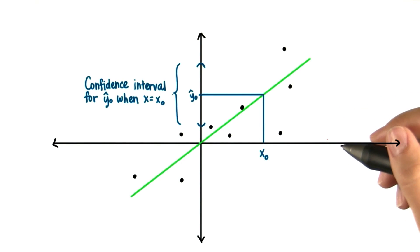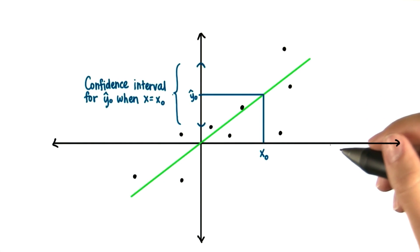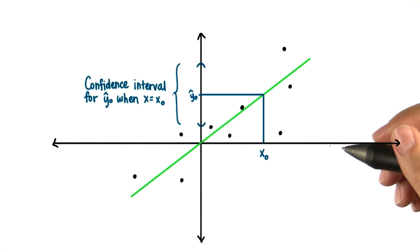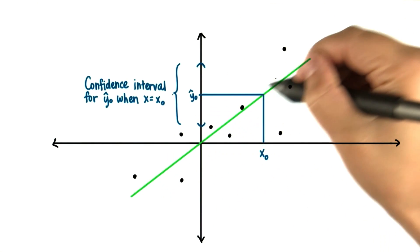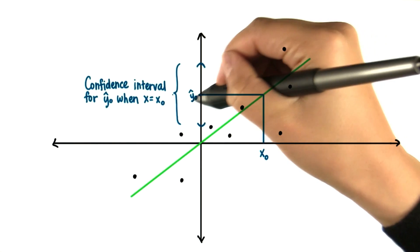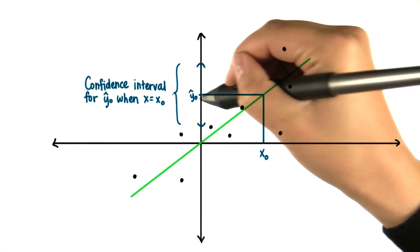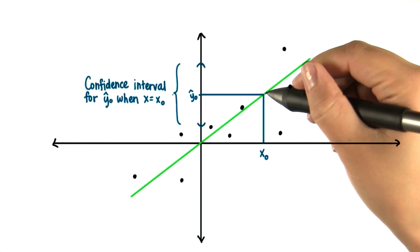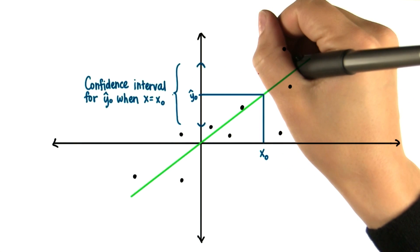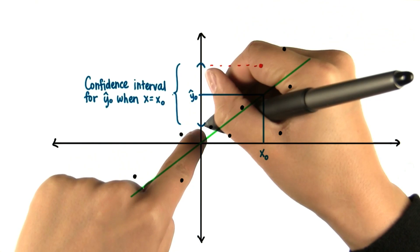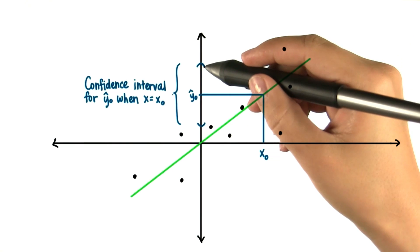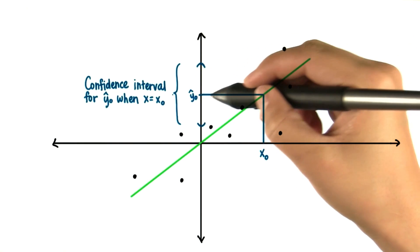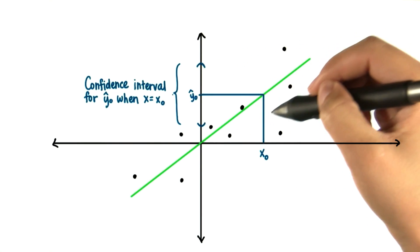Although using the standard error of the estimate can help us assess the accuracy of our predictions, we can make even more accurate predictions by computing confidence intervals for our predicted values, our y hats. In other words, when we get our regression line, we have our expected value, which is this y hat naught, for a specified value x naught. However, the actual value might be anything from up here to down here, or it might be exactly equal to our predicted value. Therefore, we might want a confidence interval around our expected value for where the actual value might be.